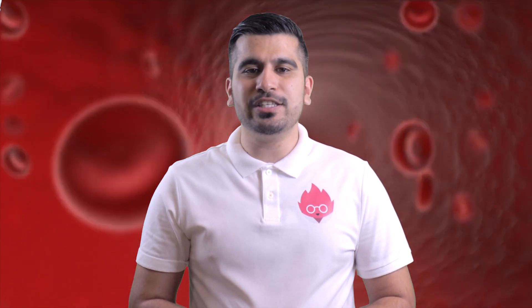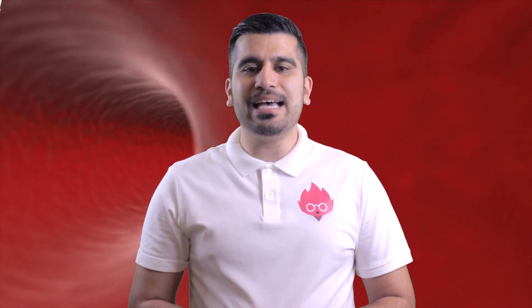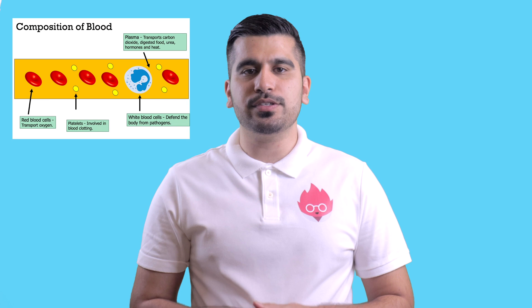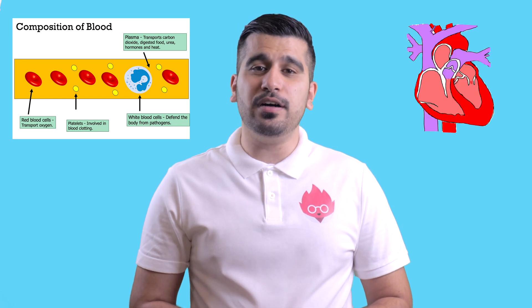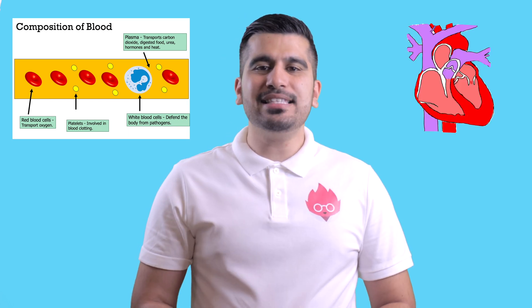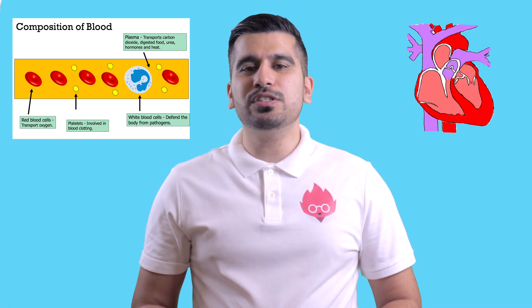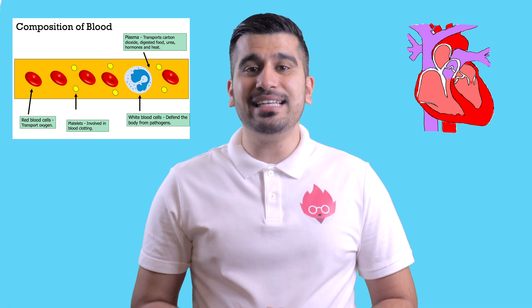In our last lesson, we looked at transport in humans, where we examined the role of the different components of blood, the structure of the heart and the blood vessels. In this lesson, we want to look at excretion in plants and animals.